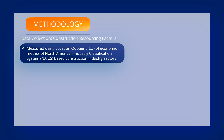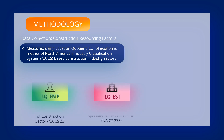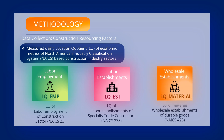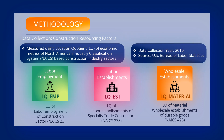Location quotient quantifies how concentrated an industry is within the region compared to the national average. Labor resourcing factors were indicated by the location quotient of annual average employment of the construction sector and annual average labor establishment of specialty trade contractors involving the construction of buildings. Material resourcing factors were measured based on the location quotient of annual average wholesale establishment of durable goods, which includes construction goods such as lumber, wood, masonry, and so on. Data was collected for the pre-disaster year 2010 from the Quarterly Census of Employment and Wages published by the U.S. Bureau of Labor Statistics.